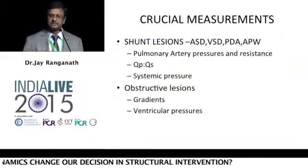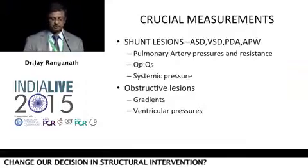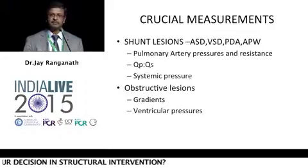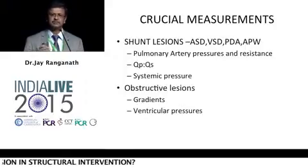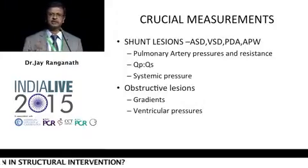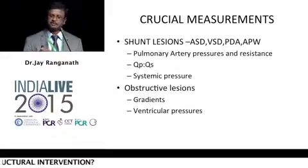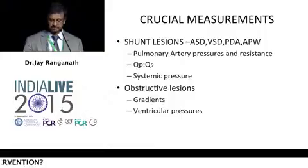In shunt lesions, these are all very standard simple cases where we have to probably change our decisions. The standard pulmonary artery resistance calculation, QP/QS, systemic pressure. Very often we don't put the arterial line, but it is mandatory before taking any particular patient — for example, a 45- or 50-year-old man with severe hypertension or diabetes, or where we suspect LV end-diastolic pressure problems — we always put an arterial line. Do not compromise on that. For obstructive lesions, of course, the gradients and ventricular pressures are key.